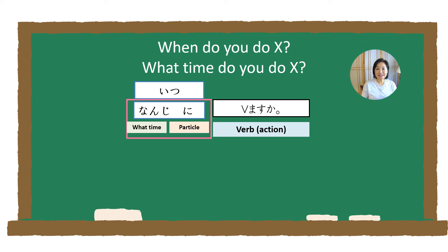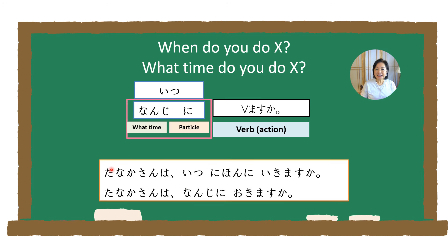When asking questions about when, you can use the question word いつ without a particle for general inquiries, or 何時に for a specific time. Compare these two sentences: 田中さんはいつ日本に行きますか is a general question asking Mr. Tanaka when he will go to Japan. While 田中さんは何時に起きますか asks Mr. Tanaka at what specific time he wakes up.